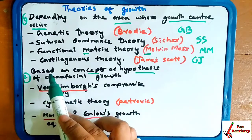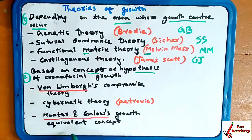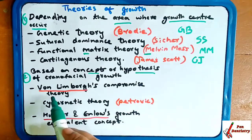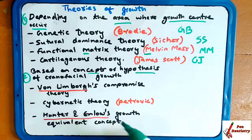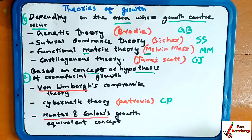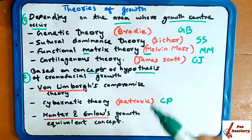Based on the concept or hypothesis of craniofacial growth, three theories were given: Von Lomborg compromise theory, given by Von Lomborg; cybernetic theory — CP — given by Petrovic; and Hunter and Lowe's growth equivalent theory. These were the seven theories which we have to learn, and we will be going through them in detail.